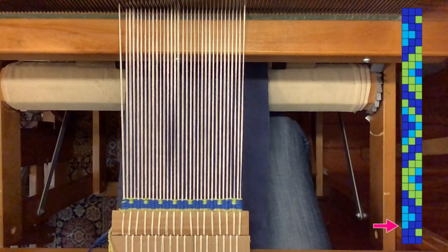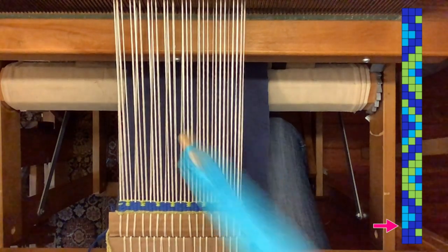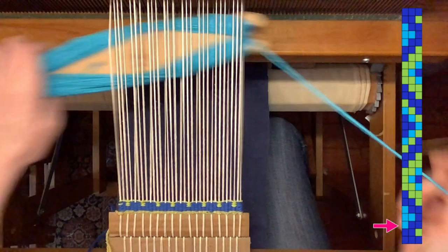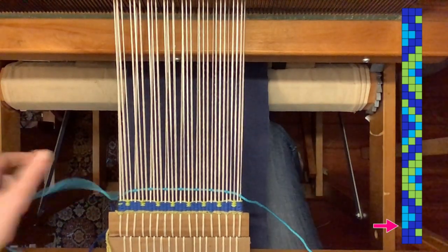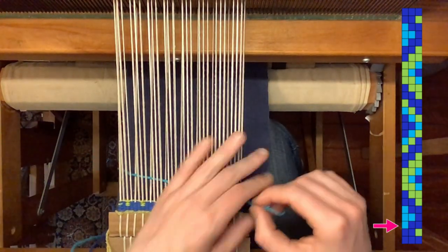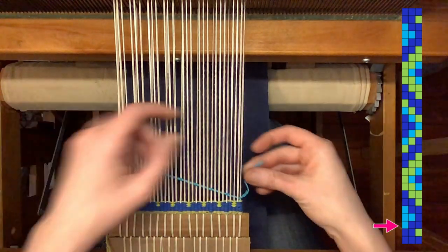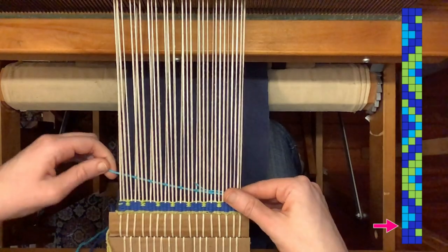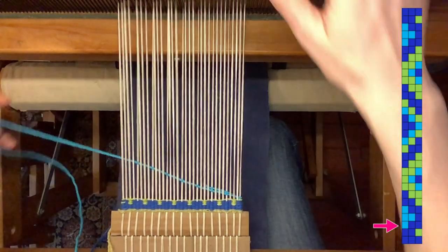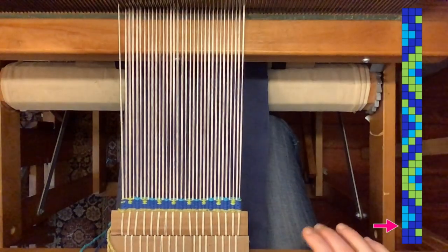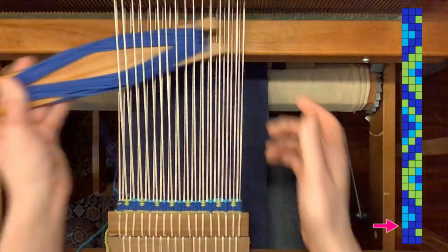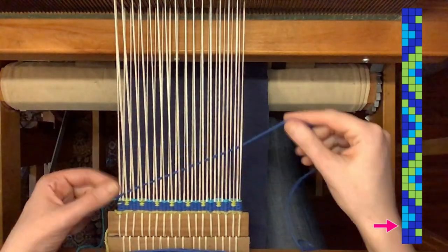My next pattern block starts with light blue in shed one, and you can taper it when you begin as well as when you end a thread. So here I've pre-tapered this one as well by trimming the plies, and I'll just tuck that around the edge thread. And this block has dark blue in sheds two and three.